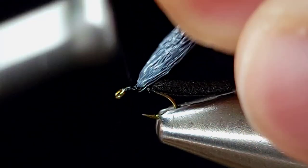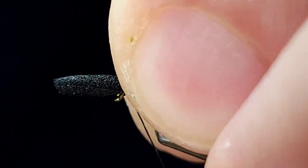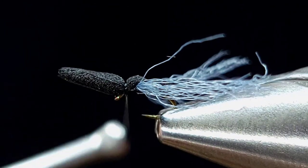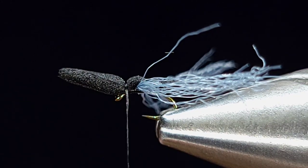And now is the time to adjust these wings however you like them. Once you have them where you like, then I'm going to wrap my thread to right behind the hook eye, fold that foam over, and secure it one more time to create a little bulbous head on this.